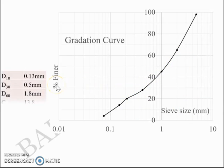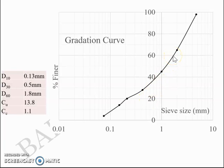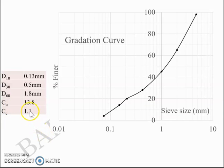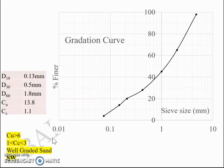The values from this graph drawn in Excel are: d10 = 0.13 mm, d30 = 0.5 mm, and d60 = 1.8 mm. Based on these, you can calculate Cu (uniformity coefficient) and Cc (coefficient of curvature). In this particular question, Cu is greater than 6 and Cc is between 1 and 3, so you can classify this as well-graded sand, SW.